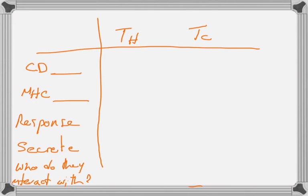We give T cells different names based on their expression of the CD co-receptor — either CD4 or CD8. CD4 associates with T helper cells, and CD8 with cytotoxic cells. These are important because what they actually do is recognize the MHC, or major histocompatibility complex. One of these — CD4 or CD8 — interacts with MHC1, and the other with MHC2 specifically.